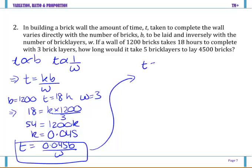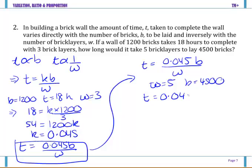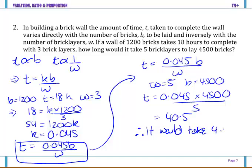From there I move into the next part of the question. And it says how long would it take 5 brick layers, so w equals 5, to lay 4500 bricks. So you get t equals 0.045 times by 4500 all over 5. So 0.045 times by 4500 divided by 5 and you get 40.5. The question was in hours so therefore it would take 40.5 hours.